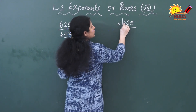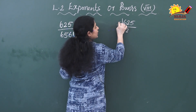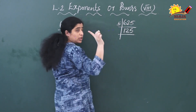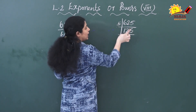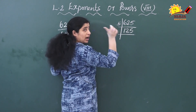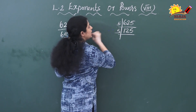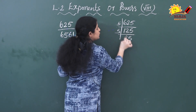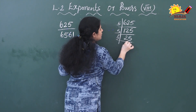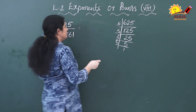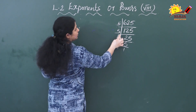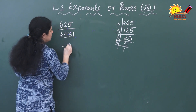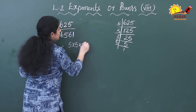Dividing 625 by 5: 625 ÷ 5 = 125, 125 ÷ 5 = 25, 25 ÷ 5 = 5, 5 ÷ 5 = 1. So how many times have I multiplied? 1, 2, 3, 4 — four times. That means 625 equals 5 raised to 4.